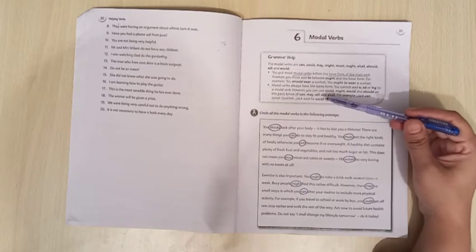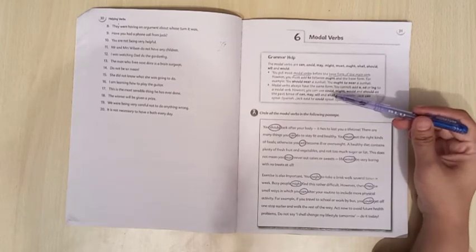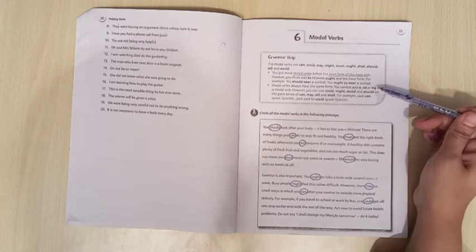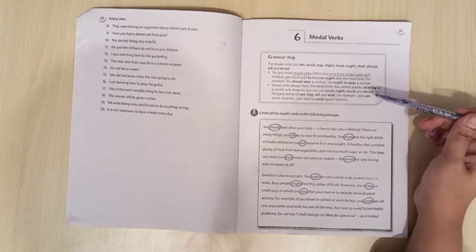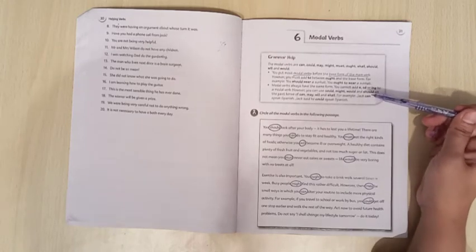Modal verbs always have the same form. Modal verbs keep the same form. You cannot add S, E, D, or I, N, G to the modal verb. In any modal verb, you can't affix it with any model verb.